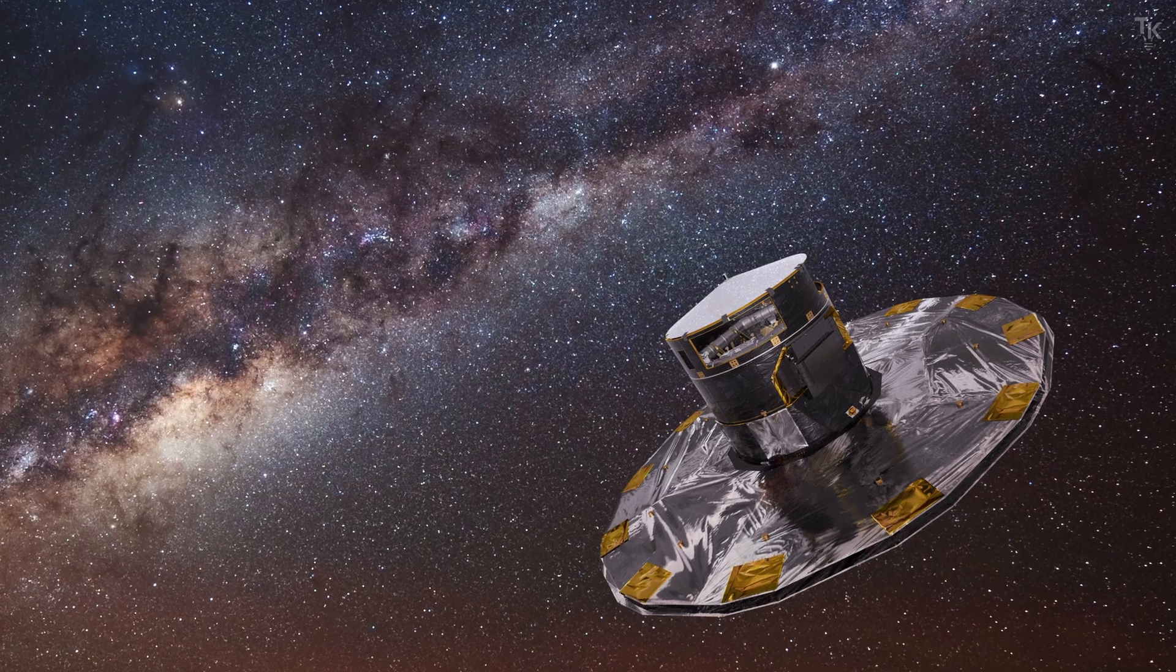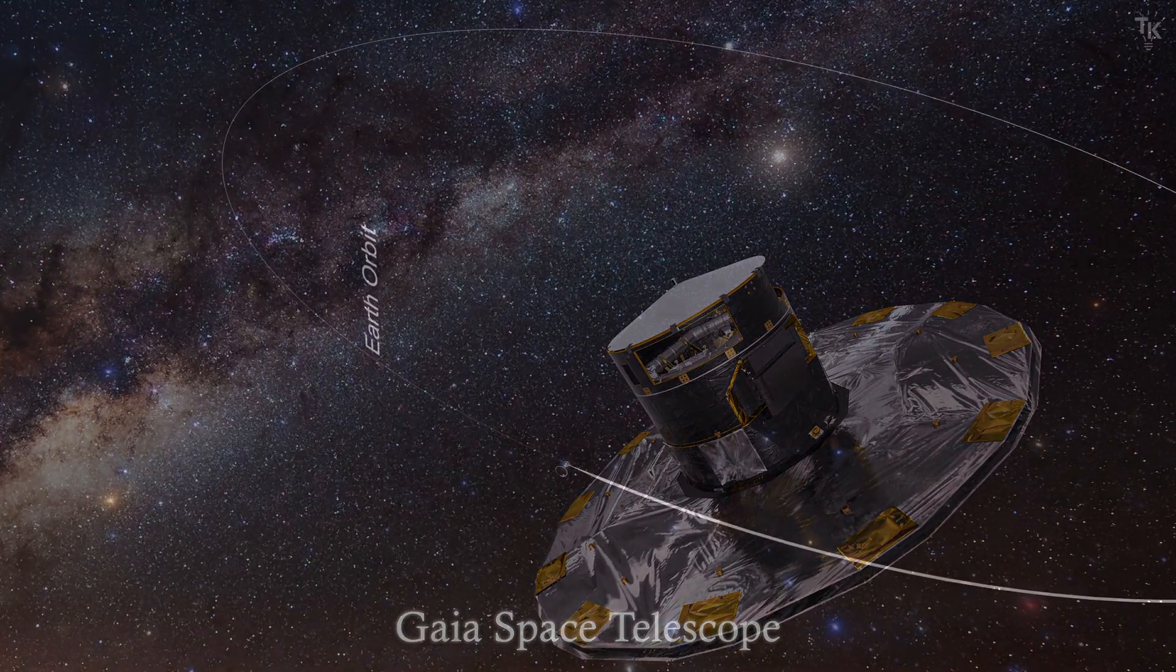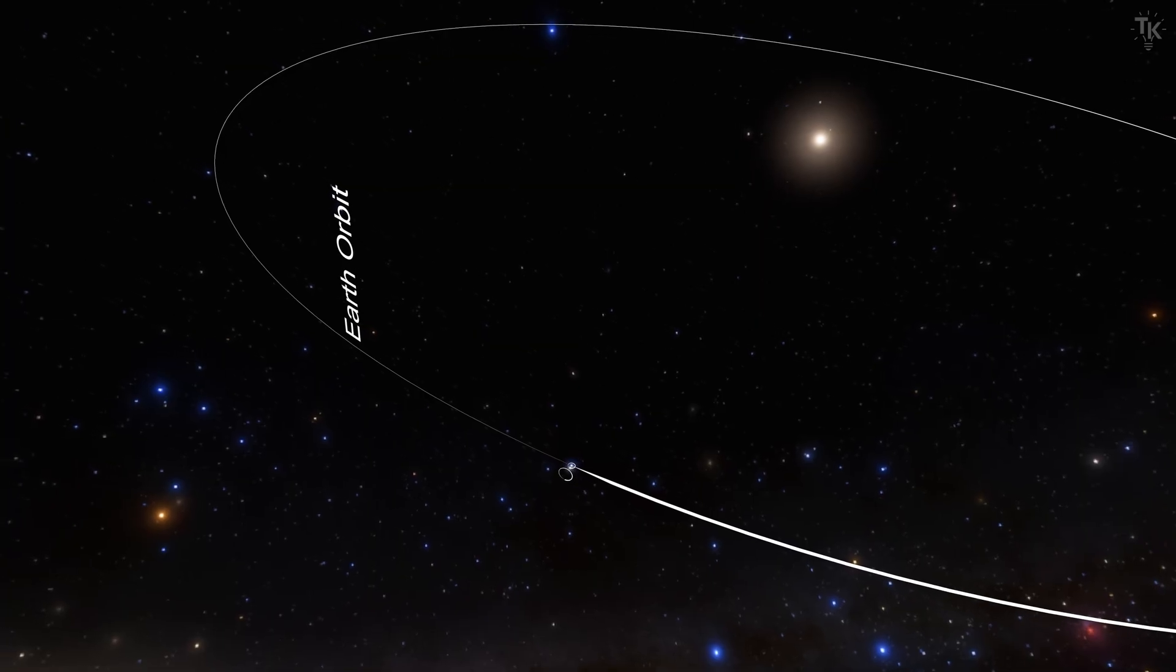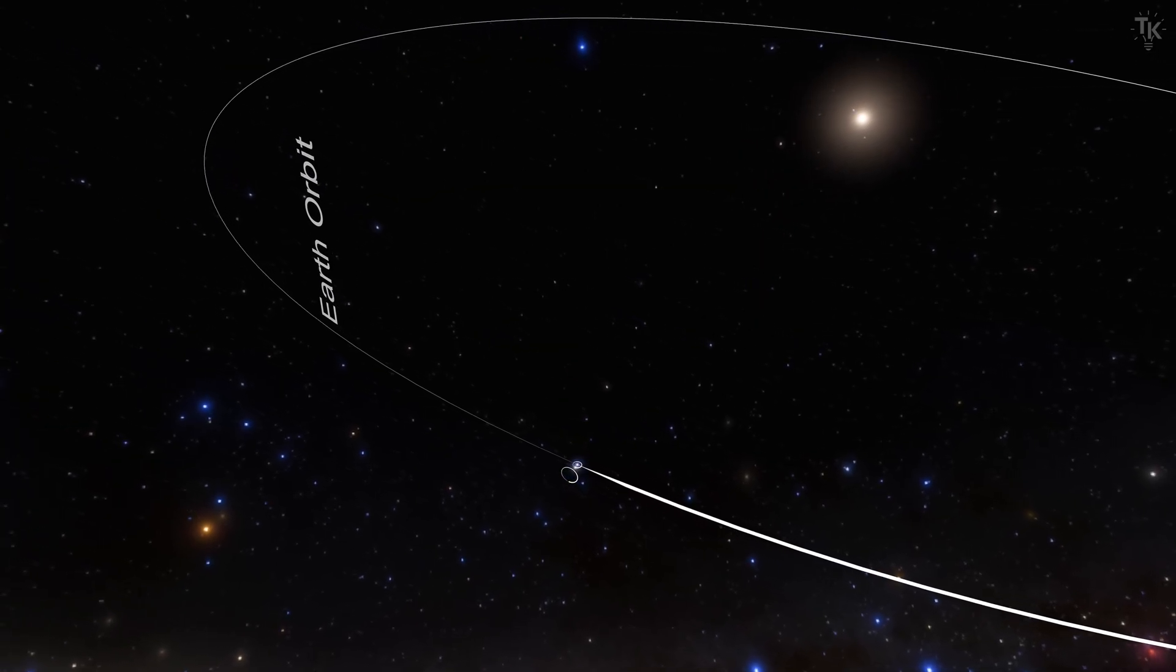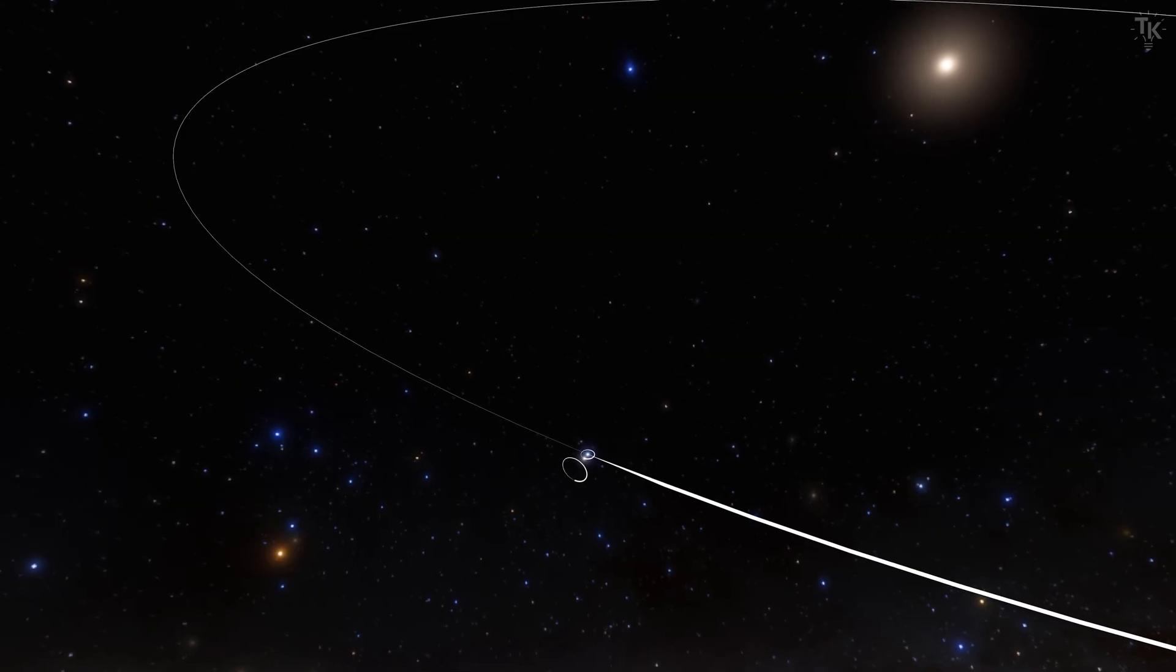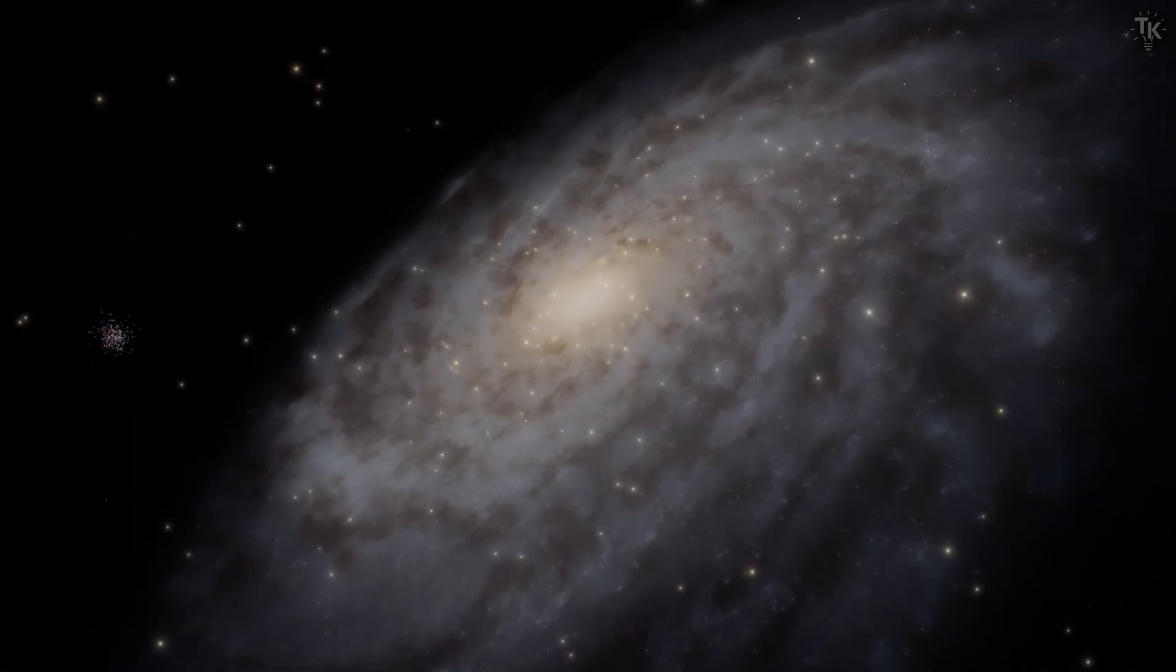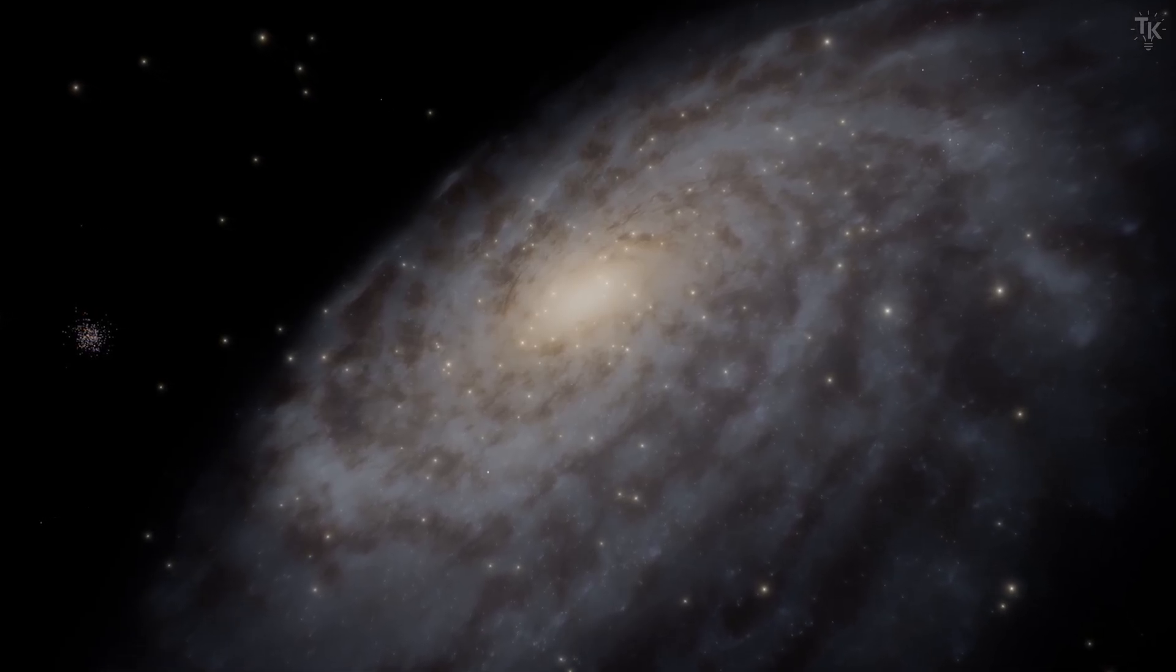In 2013, ESA launched the Gaia Space Telescope. Gaia can precisely observe the brightness, temperature, composition, motion, and position of individual celestial objects. It analyzed the three-dimensional motion of about seven million stars within the Milky Way.